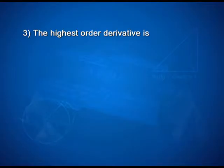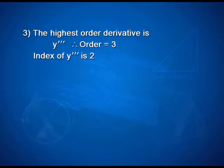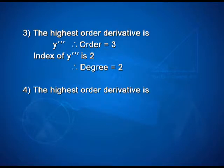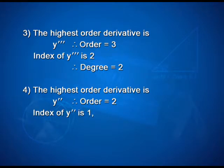Third equation: y''' ² + y'' ³ + y' ⁴ + y⁵ = 0. The highest order derivative is y''', so order = 3. The index of y''' is 2, therefore the degree = 2. Fourth equation: y'' + y'² + 2y = 0. The highest order derivative is y'', so order = 2 and the index of y'' is 1; therefore the degree = 1.